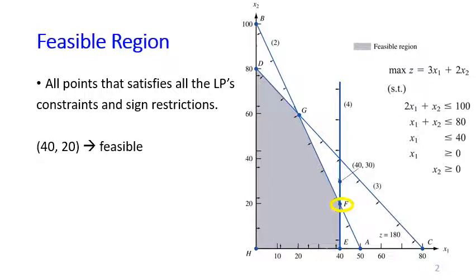Let's take a look at some examples. The point x1 equals 40 and x2 equals 20 is a feasible point because it satisfies all the constraints and all sign restrictions. You can also see that it is actually in the feasible region in the shaded area.